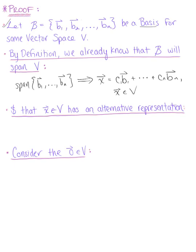Now, the goal is to show that these scalars c sub 1 through c sub n are unique. So let's suppose that vector x has an alternative representation using a different set of scalars. We can write for some vector x in v: d sub 1 times vector b sub 1 plus all the way to d sub n times vector b sub n, where d sub 1 through d sub n are the weights or scalars.